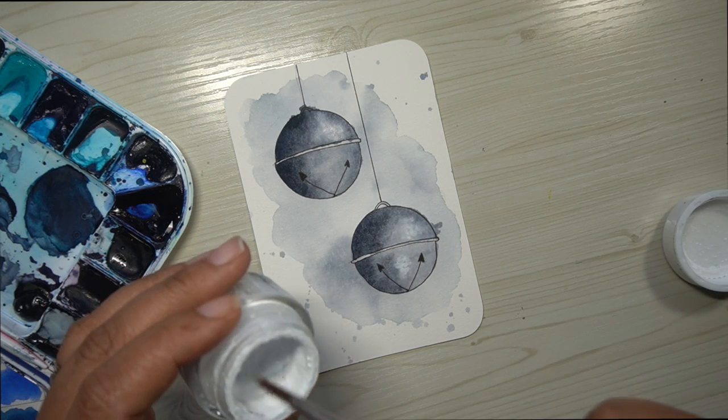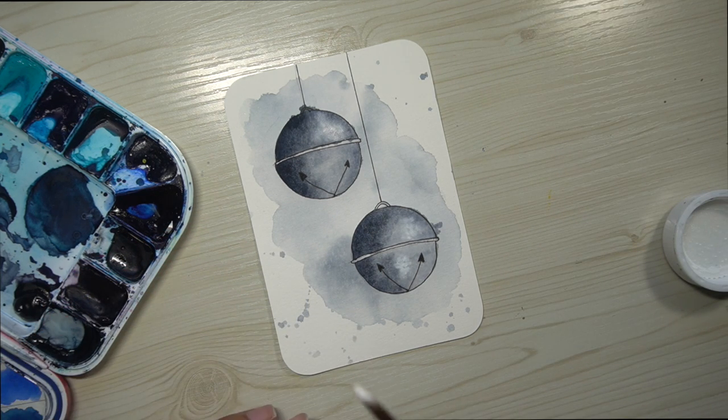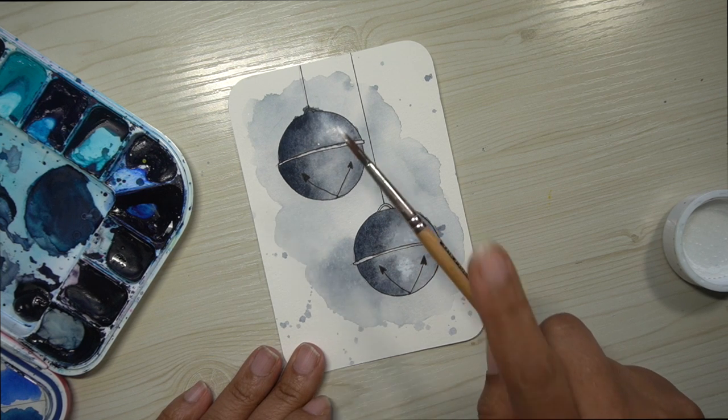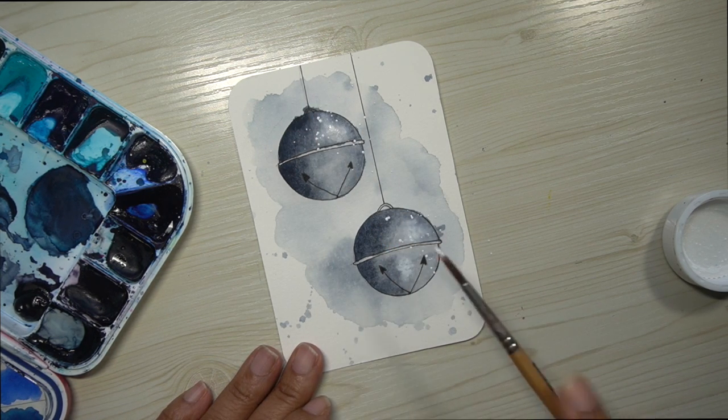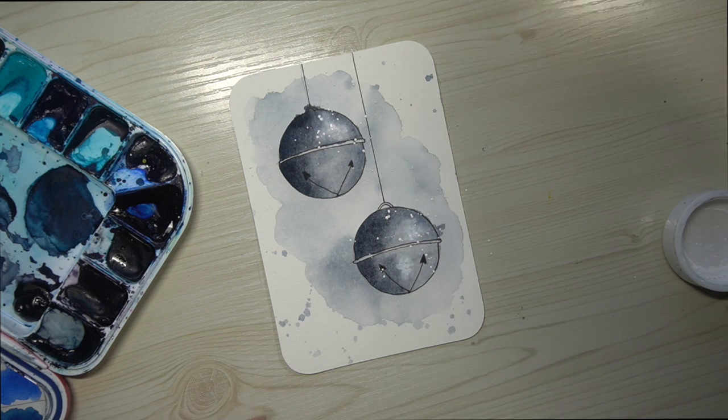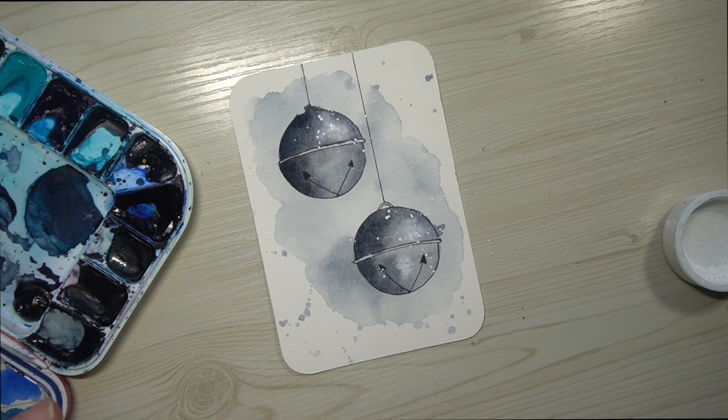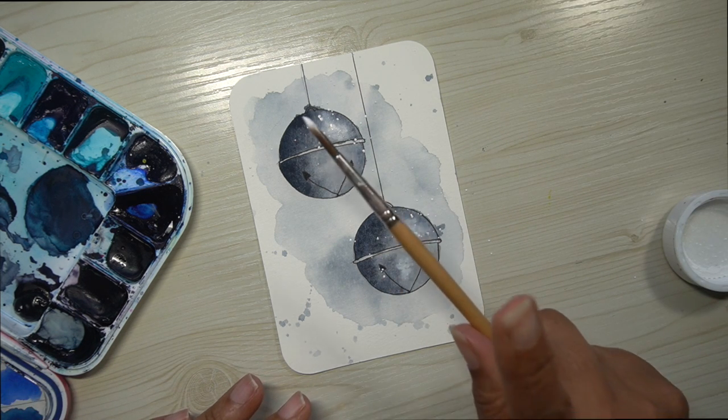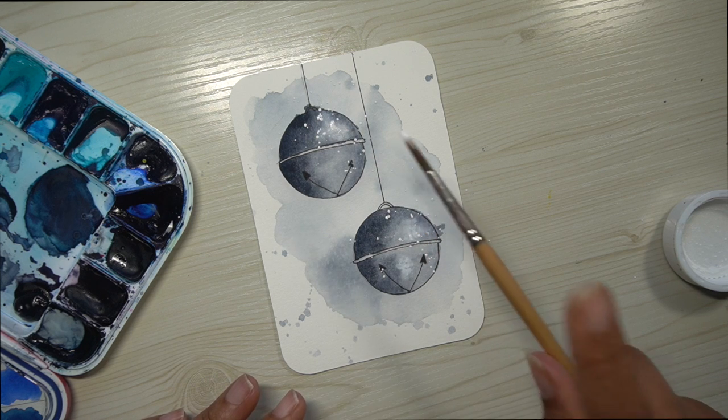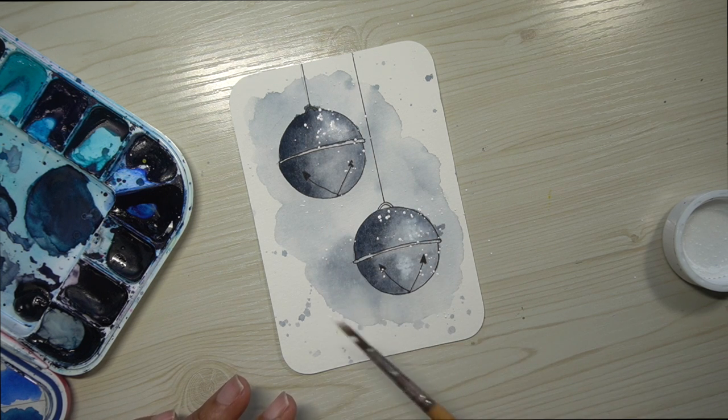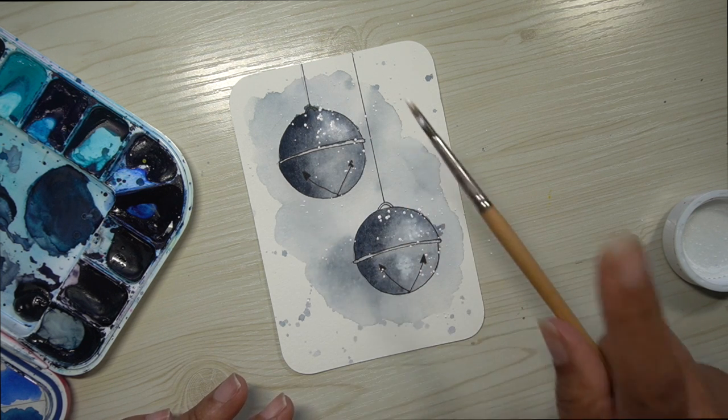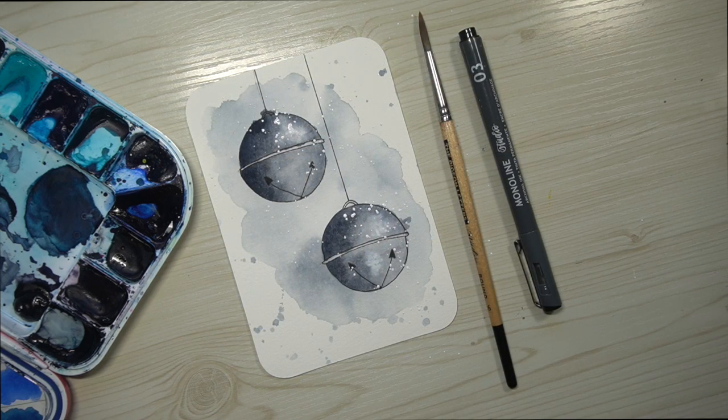Now to finish this off, we are going to grab a nice amount of white on a wet brush, and we are going to strategically splatter some of that over the bells and over the background. So that's what we're doing now. As you'll see, I'm adding a little bit more to the top of each bell than to the bottom, and I'm making sure to add some into the background. And with that, we are done.